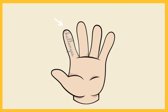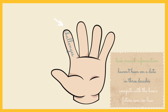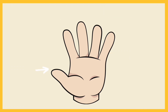Next up, we have the index finger, where you outline the obstacles or challenges your character faces while pursuing their goals. This often introduces a significant 'but' in the story. Maybe they lack crucial information, haven't been on a date in three decades, or have to compete with the boss's future son-in-law.